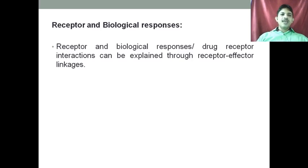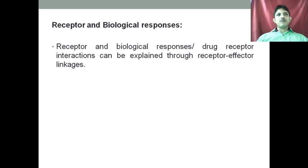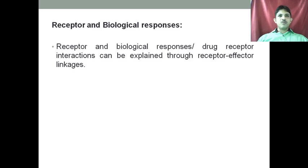For example, if the drug binds to the ligand-gated ion channel receptor, it will cause the opening of some channel. If it is a sodium channel, sodium will come inside and cause excitation. If it is a chloride channel, chloride will come inside and cause inhibition. If the potassium channel opens, potassium will go outside, causing an inhibitory response. So the drug is triggering the opening of these different channels.